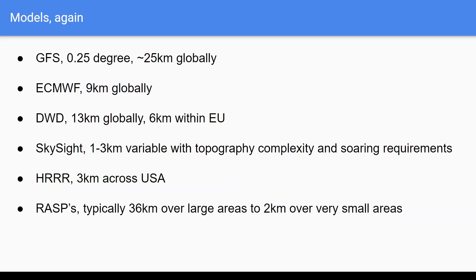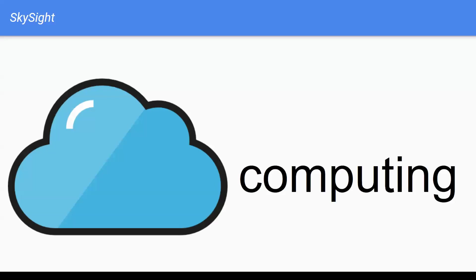In terms of resolution: GFS is about 25 kilometers globally, ECMWF about 9 kilometers globally, Deutscher Wetterdienst about 13 kilometers globally and 6 within Europe. SkySight varies — around 3 kilometers for most of Australia. HRRR in the United States is about 3 kilometers, and RASPs range between 36 kilometers and 2 kilometers depending on who has set them up.